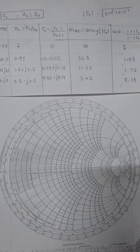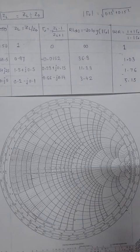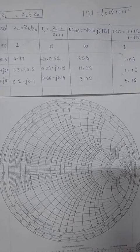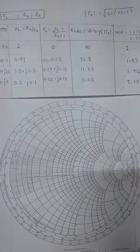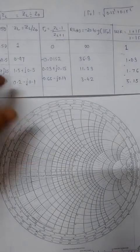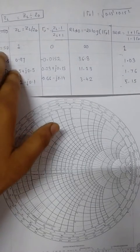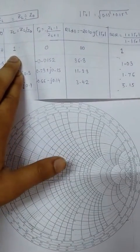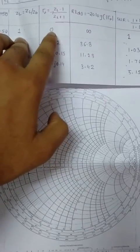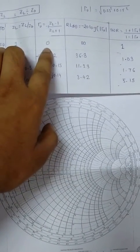Now plot this result - reflection coefficient, SWR, and return loss on the Smith chart. First, we have ZL equal to 50. The normalized impedance is 1 and the reflection coefficient is 0.